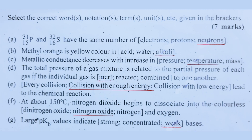Number D: The total pressure of a gas mixture is related to the partial pressure of each gas. If the individual gases are inert to one another, then the total pressure equals the sum of the partial pressures.